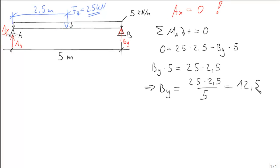This gives 12.5 kN. If the force is in the middle, the reaction forces here and here should be equal. So Ay equals By equals 12.5 kN.